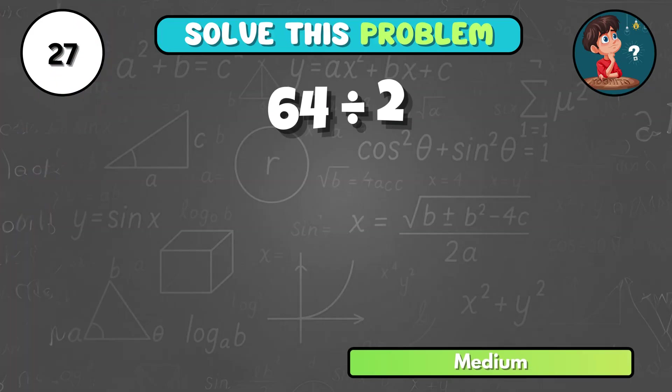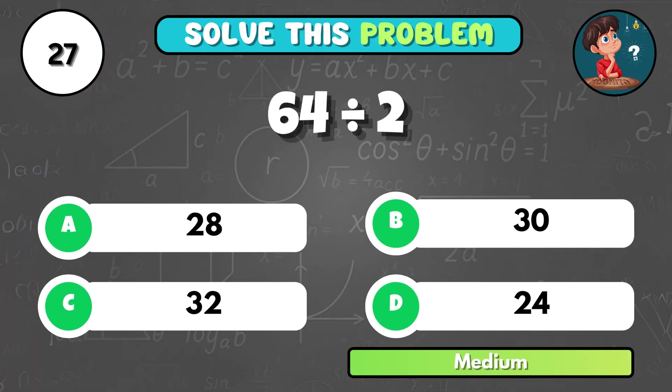Can you calculate 64 divided by 2? That gives C, 32.